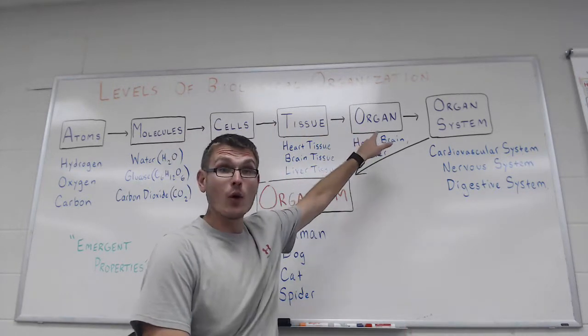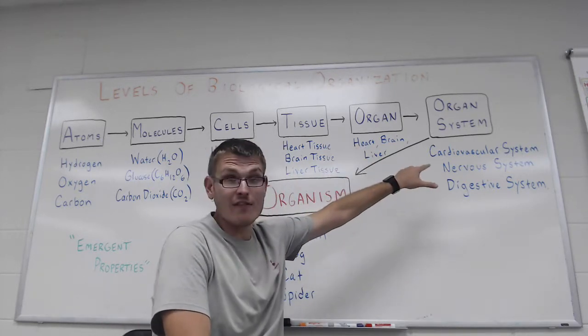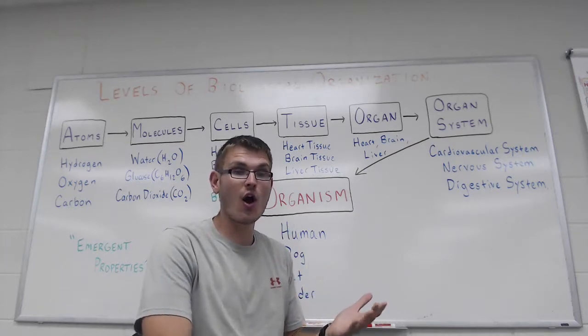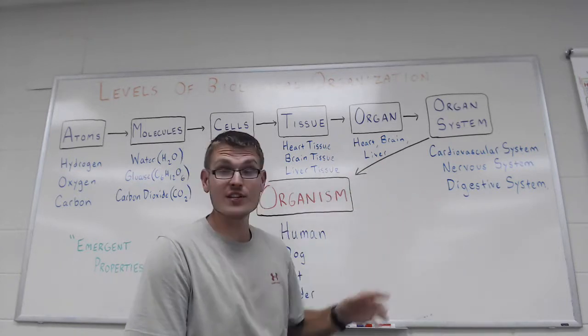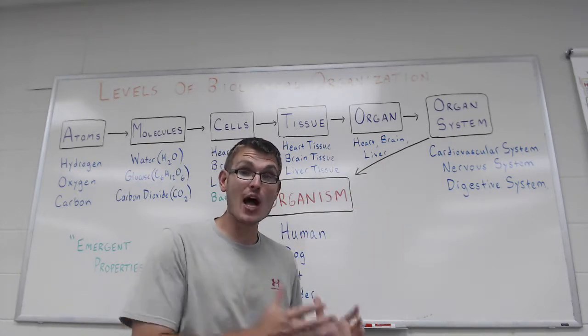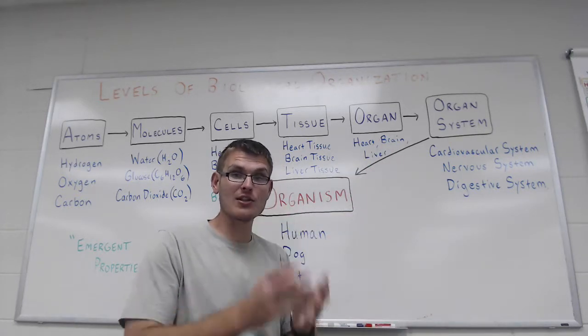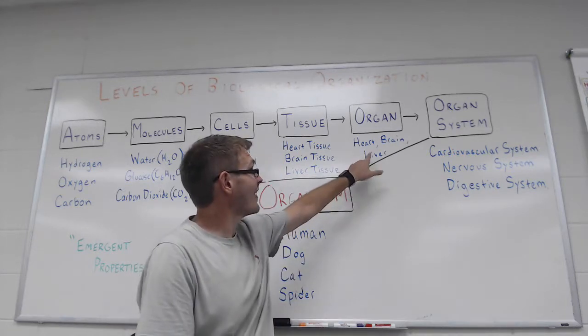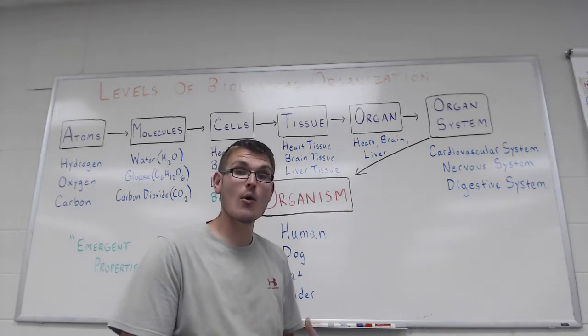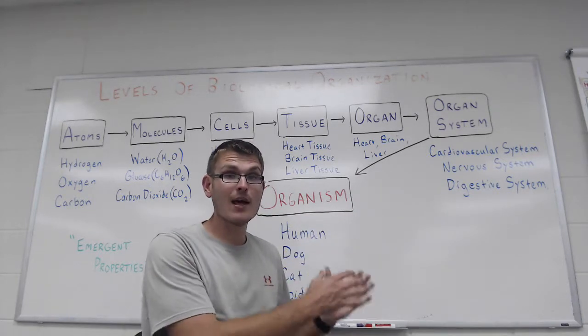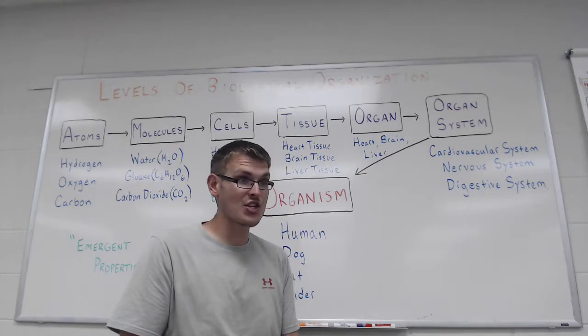So when multiple organs start working together, that forms an organ system. So for the heart, you've got the cardiovascular system. So there, in addition to the heart, you're also talking about blood vessels and things like that. For the brain, you have the nervous system. So in that case, you're not just talking about the brain, which is one organ. You're also talking about all the nerves, you're talking about the spinal cord, things like that. And then the liver, which is just one organ, it's part of the digestive system. So it's working together with the stomach, the pancreas, the intestines, the colon, all the other organs that make up the digestive system.